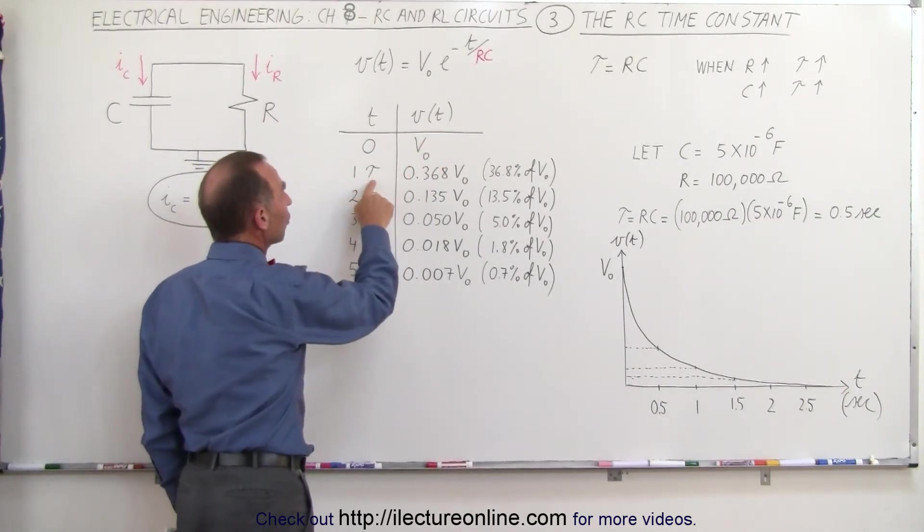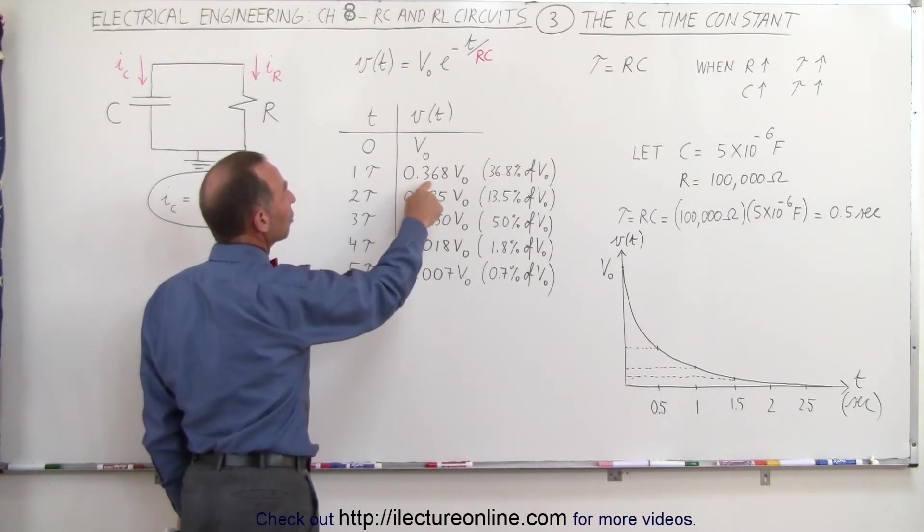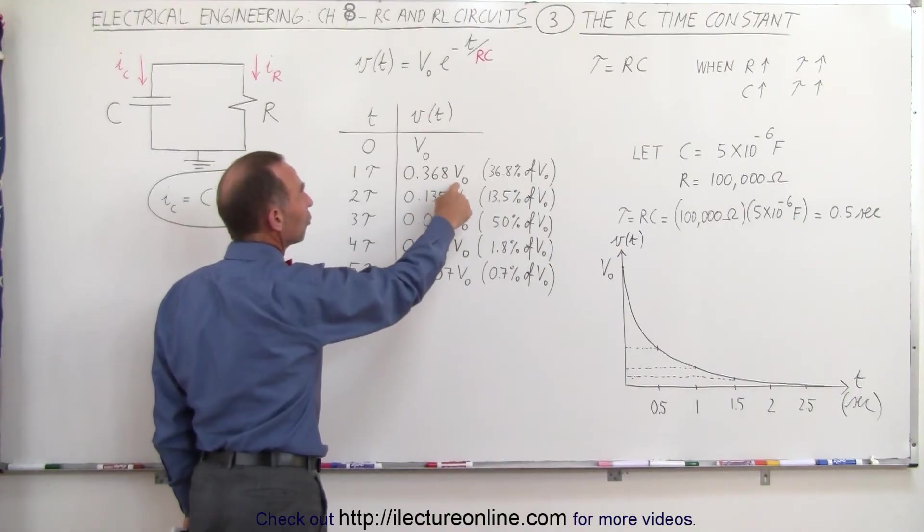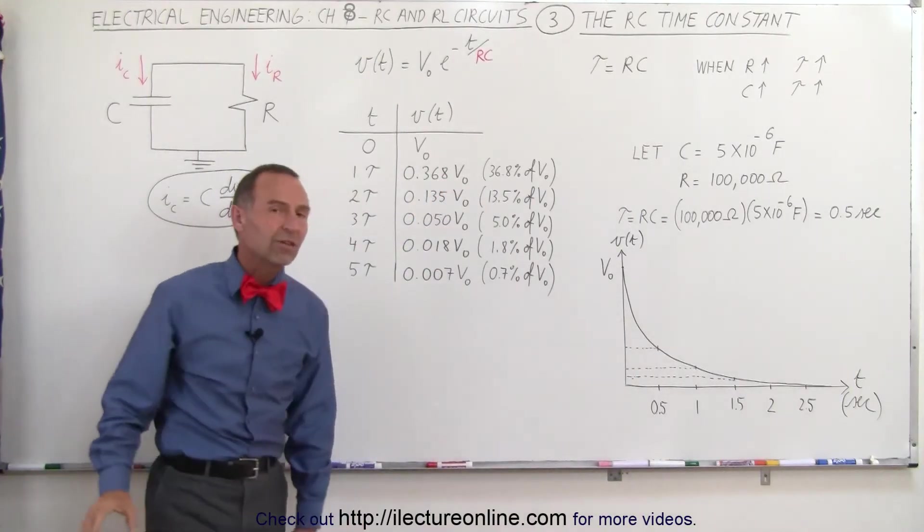But after one time constant, the voltage has decreased to 0.368 times the initial voltage, or 36.8% of the initial voltage.